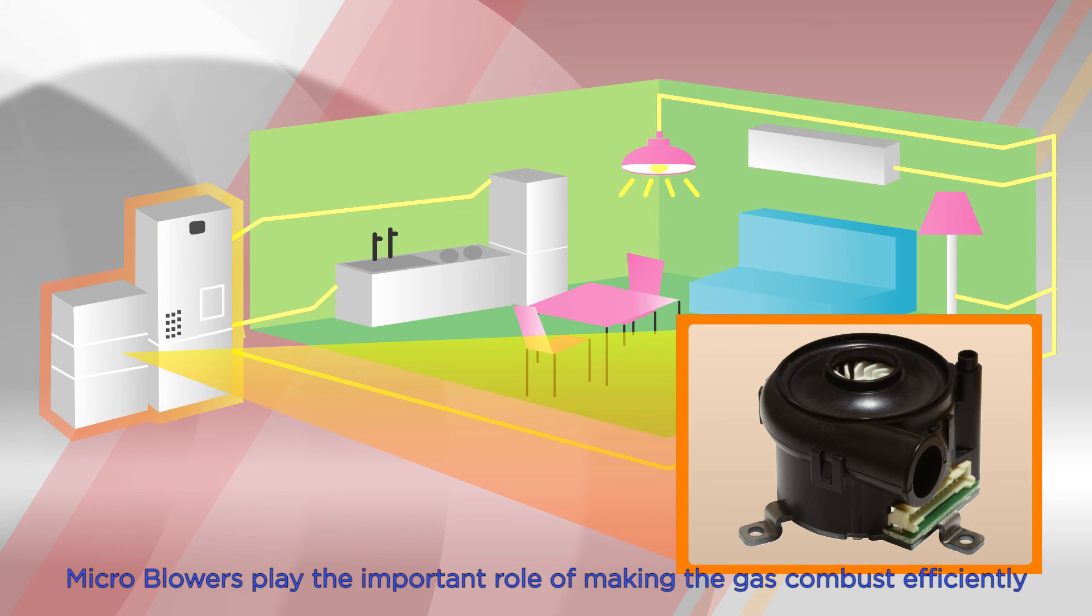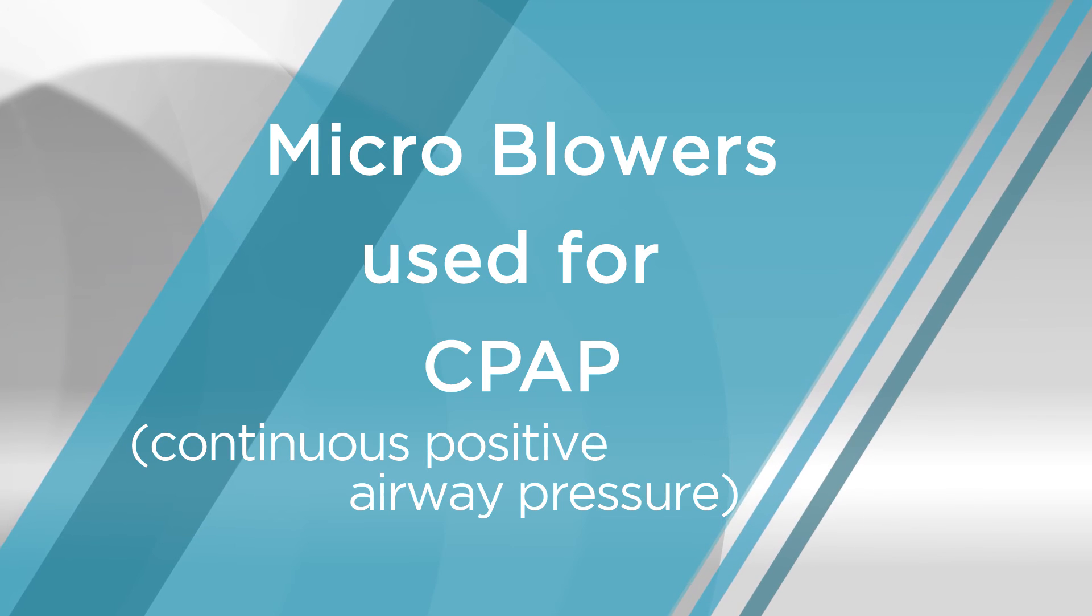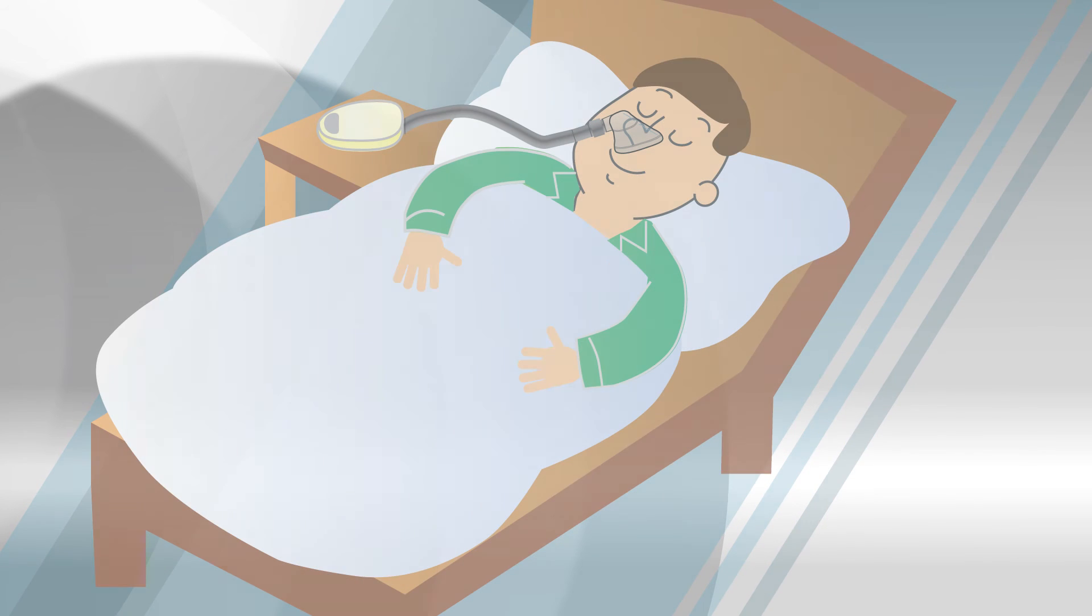In that system, micro blowers play the important role of making the gas combust efficiently and making hydrogen and oxygen flow.